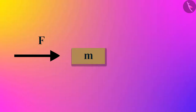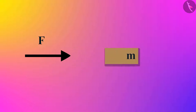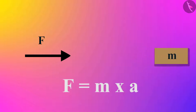In our previous videos, we saw that the first law tells us how an applied external unbalanced force changes the motion of an object, and the second law of motion tells us how this applied force on the object can be measured using its mass and acceleration.